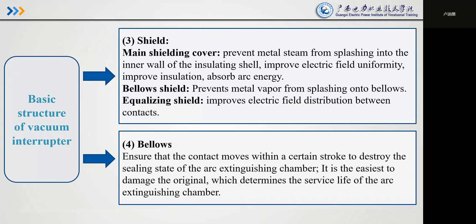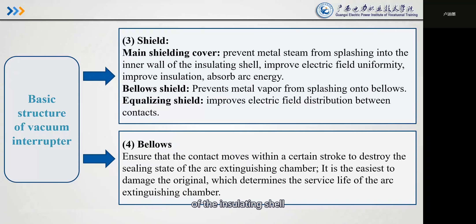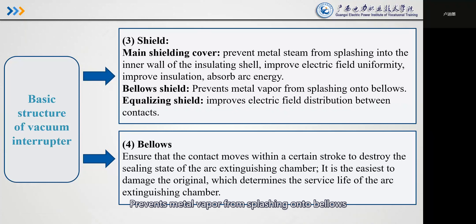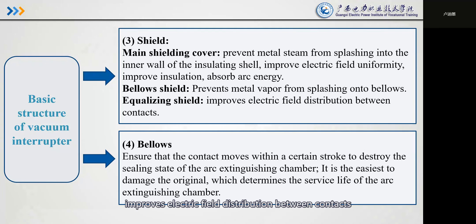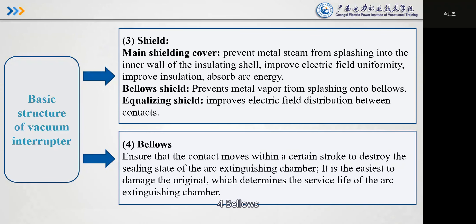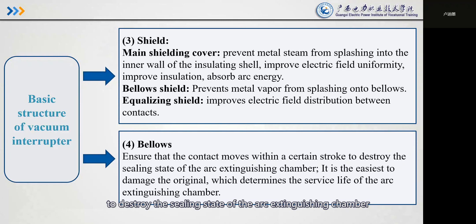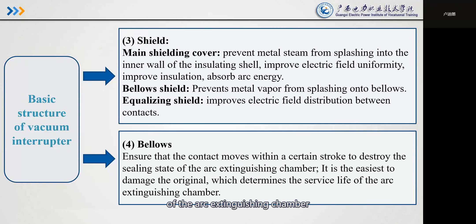(3) Shield: The main shield prevents metal steam from splashing onto the inner wall of the insulating shell, improves electrical field distribution, absorbs arc energy. The bellows shield prevents metal vapor from splashing into the bellows. The equalizing shield improves electrical field distribution between the contact parts. (4) Bellows: Ensures that the contact moves within a certain stroke to maintain the sealed state of the arc-extinguishing chamber. It is the most easily damaged component, and it determines the service life of the arc-extinguishing chamber.